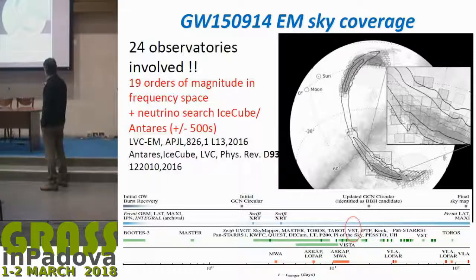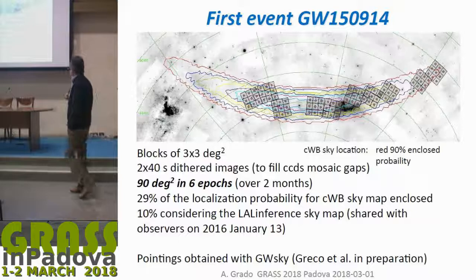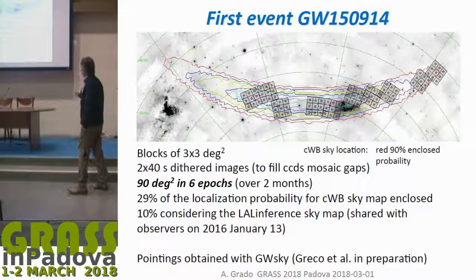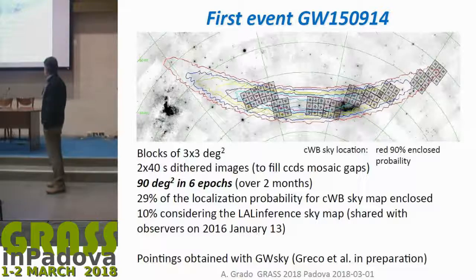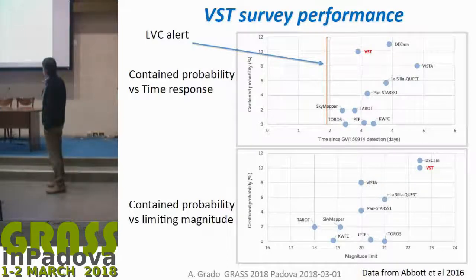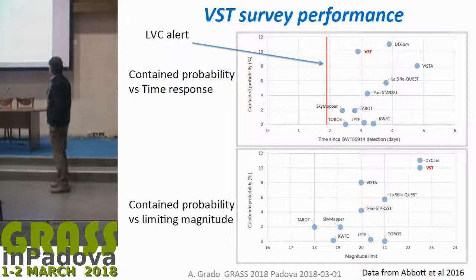For the first gravitational wave event, VST imaged 90 square degrees in six epochs, covering 29% of the localization probability. VST was the first large telescope to go and search — very fast — and also achieved very deep observations.